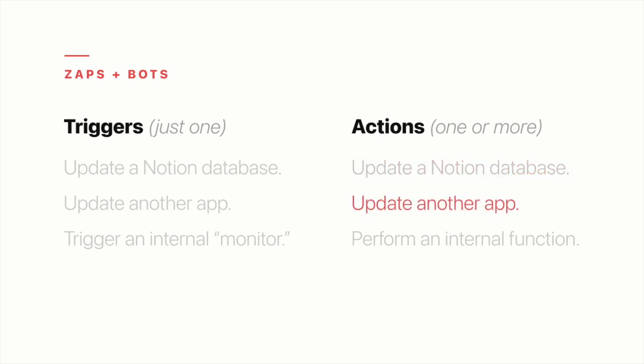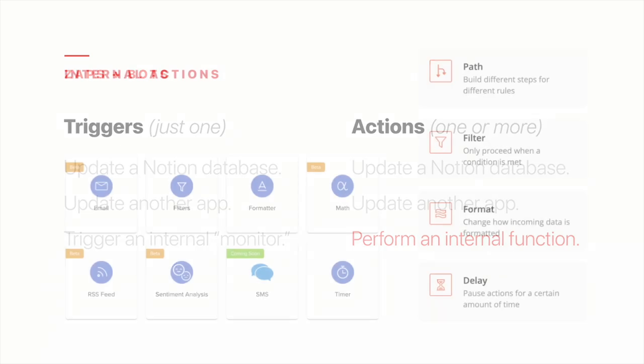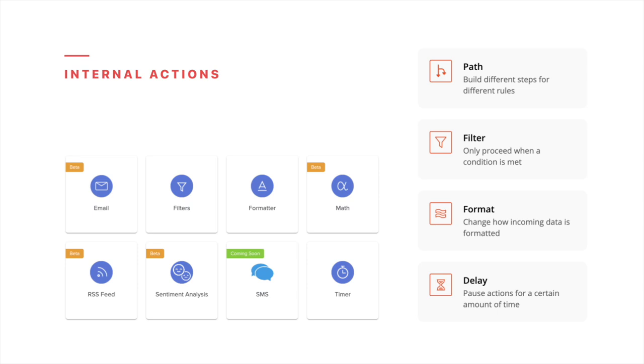And if your zap or bot is triggered in Notion, you'll often want the actions to occur in other apps. For example, if a person is added to your contacts database in Notion, add that contact to Salesforce; and if a meeting is added to an events database in Notion, create the event in Google Calendar. Zapier and Automate.io also offer a variety of internal actions that often serve as interim steps — for example, you can reformat information to make it more suitable for its destination, such as reformatting a birthday from numeric to written format before applying it to an email.